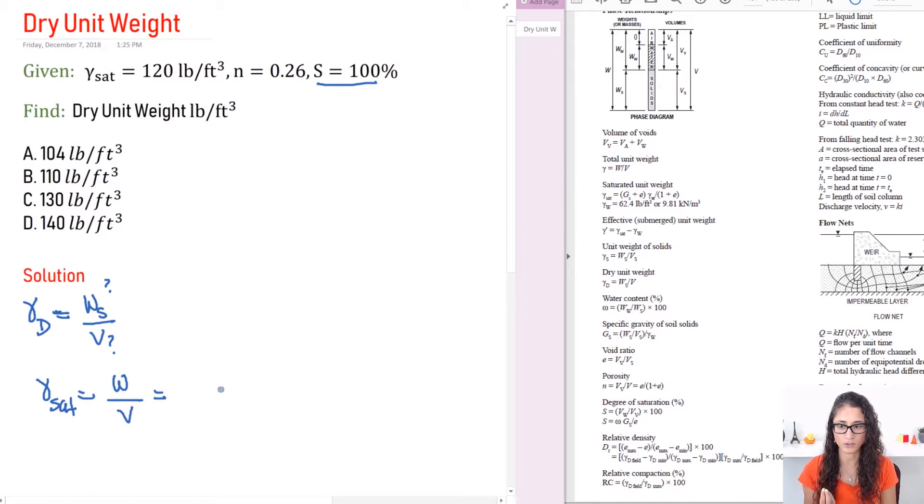So when you have this 100% saturation your soil is composed of two things: the soil and the water. That's it. You don't have air because it's all filled with just water. So let's write it down. So I have the weight of the water plus the weight of the solid and then divided by V. You guys agree with me so far. So the next step is let's write the weight of the water divided by V plus the weight of the solid divided by V.